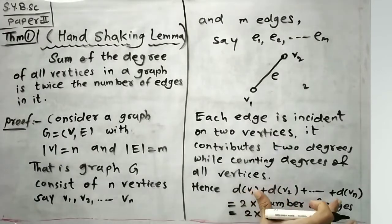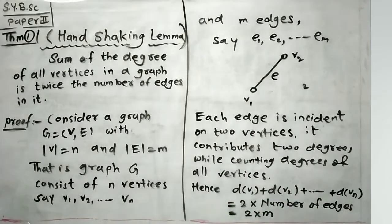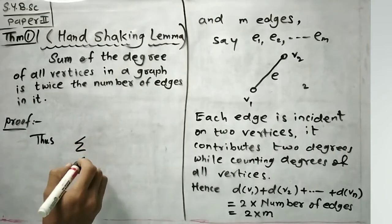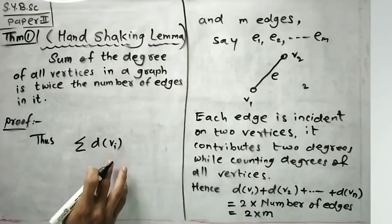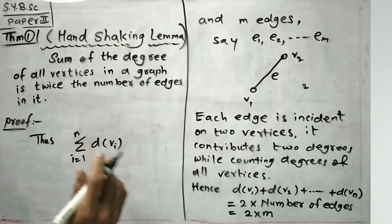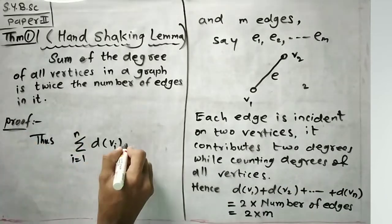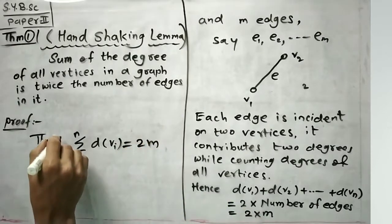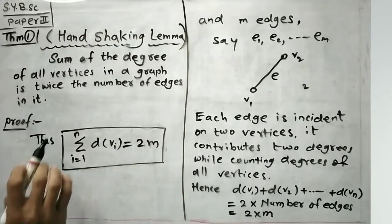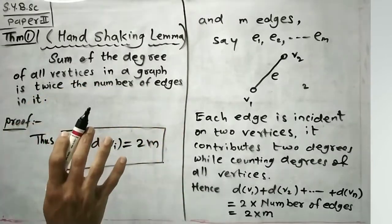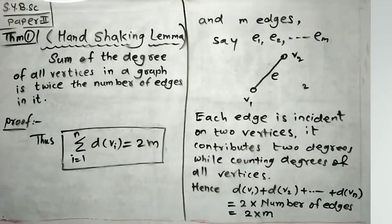Thus, summation of d(vi) where i runs from 1 to n, starting at 1 and ending at n, is equal to 2 into m. And this is what we have to prove. Sum of the degree of all vertices in the graph is twice the number of edges in it. This completes the proof of theorem number 1.